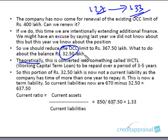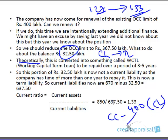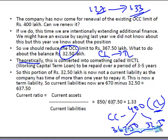By doing that, you are essentially converting a current liability into a term liability. The entire CC of 400 is currently a current liability. The MPBF is only 367.5, while 32.5 is excess borrowing — both are currently current liabilities. What we are now doing is taking this excess borrowing of 32.5 and translating it into a term liability.